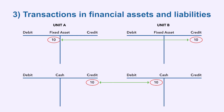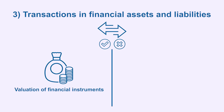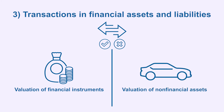Both debtors and creditors should record the same amount for the same financial instrument. The valuation of financial instruments, which excludes commission charges, differs from the valuation of non-financial assets — excluding land — which includes any costs of ownership transfer. Costs of ownership transfer on land are included in the value of land improvements.